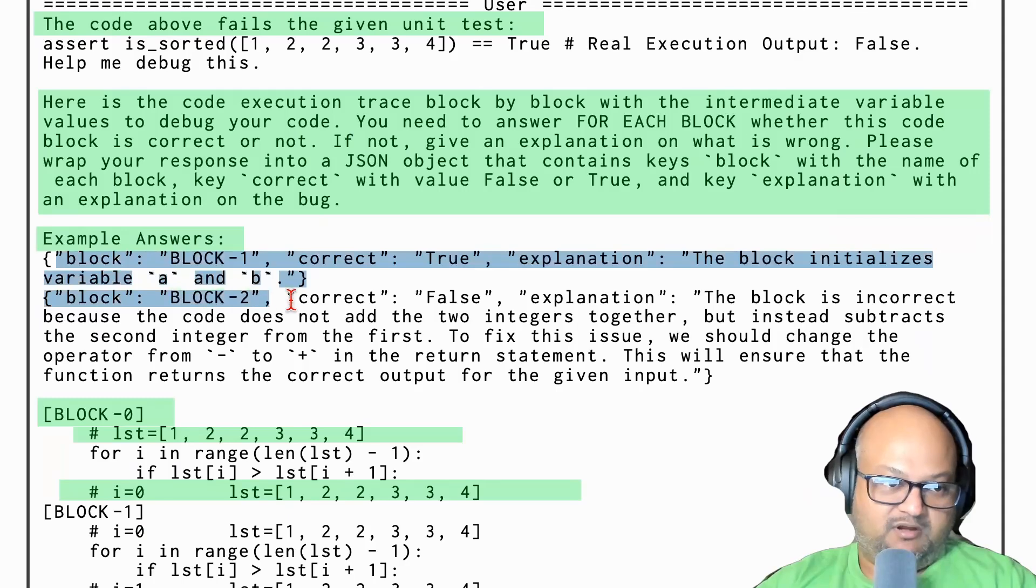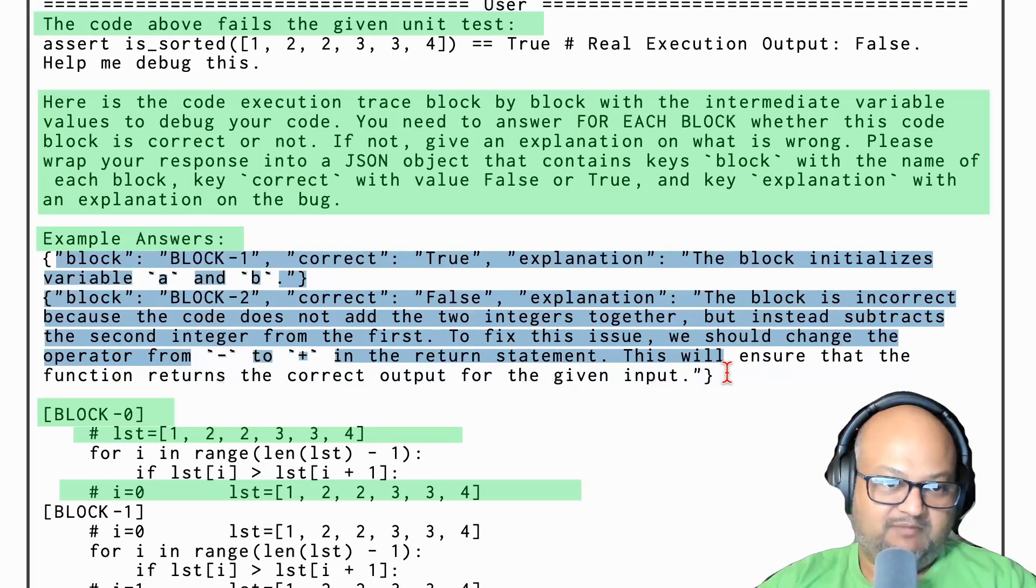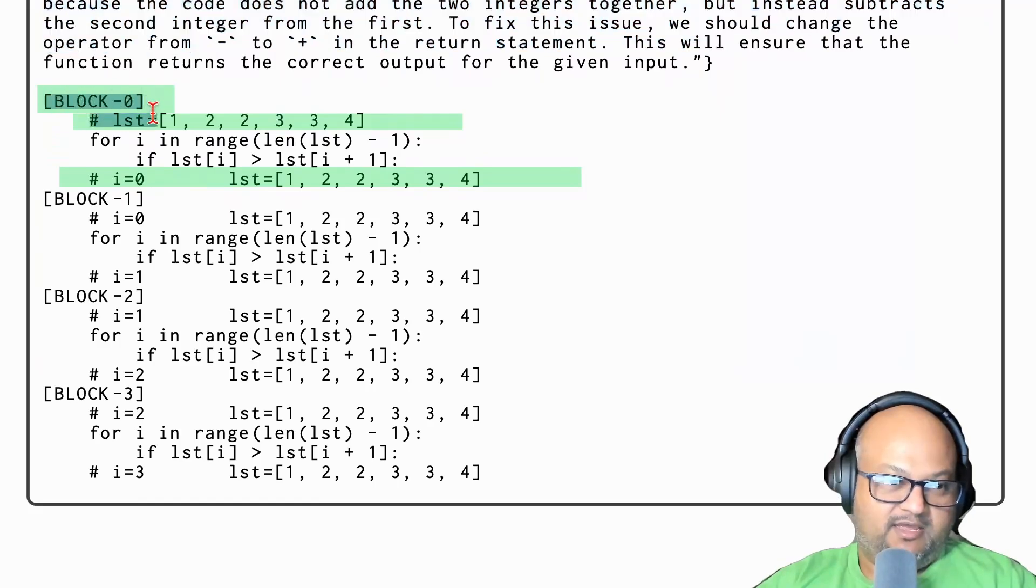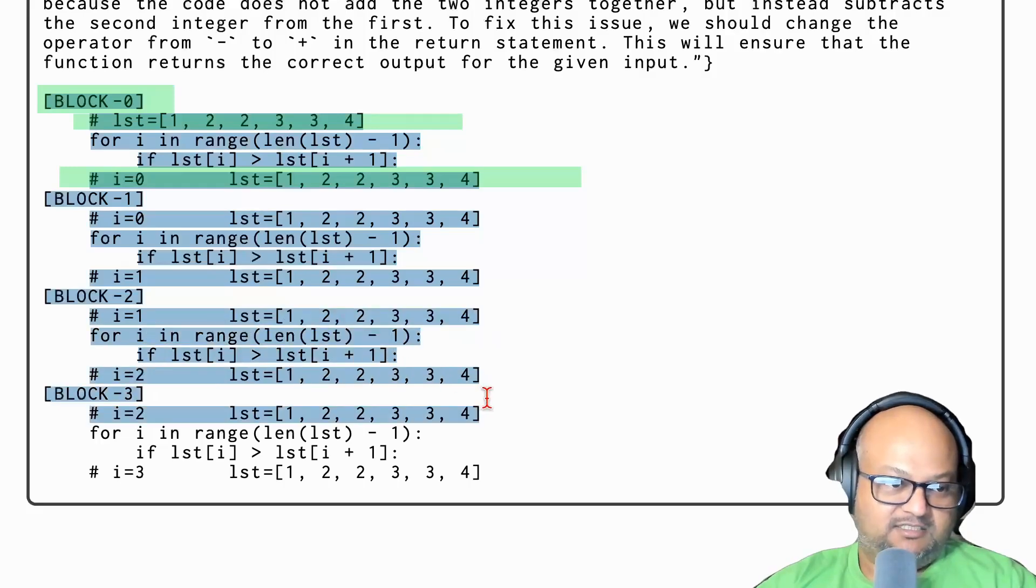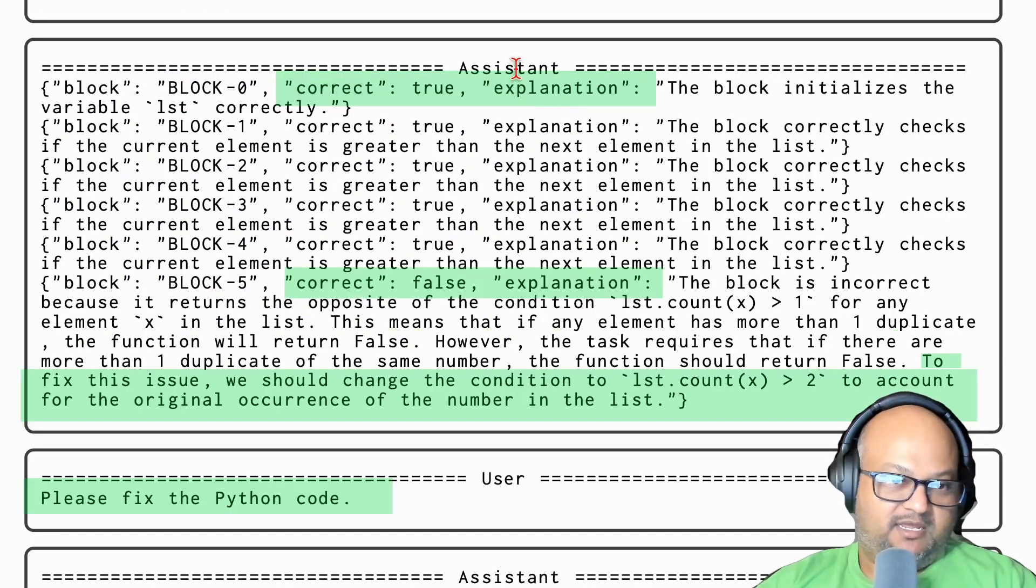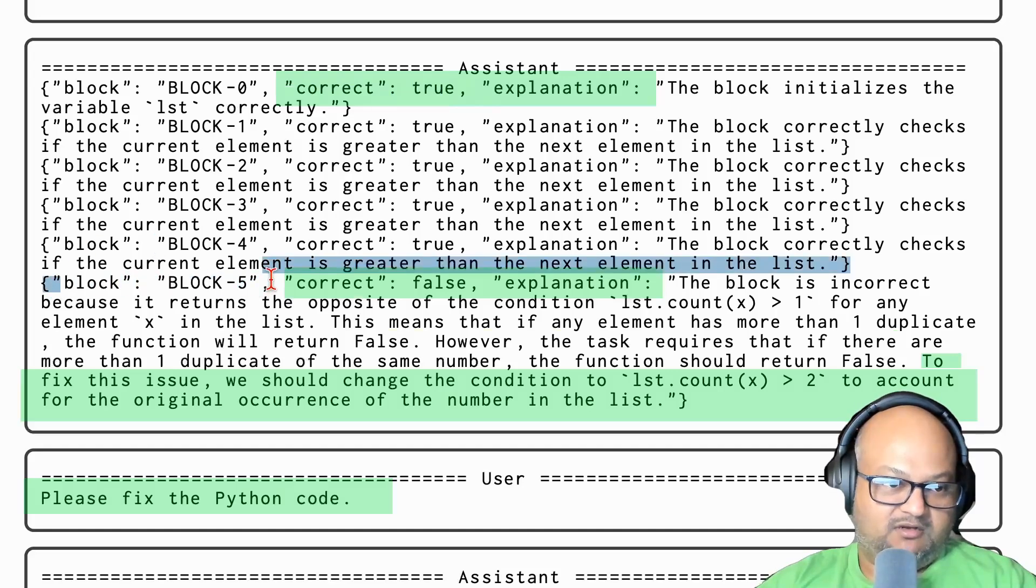This is actually a few-shot prompt. They give a couple of examples here. Then that is followed by a textual encoding of the block by block values of the various variables in this execution trace. The LLM takes that long prompt, and this is the result it comes back with. For some blocks, it says that yes, that block seems to be correct. Here in this case, there was a bug in block number five. It says false for correctness and provides an explanation: 'The block is incorrect because greater than one should actually have been greater than two.'